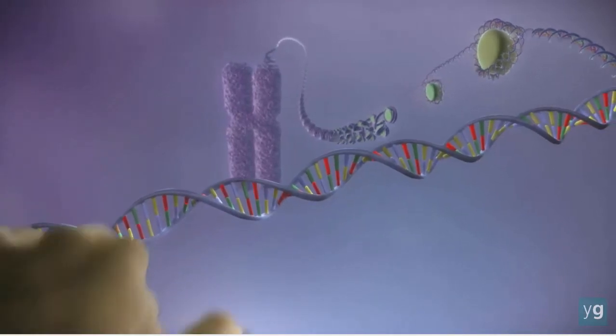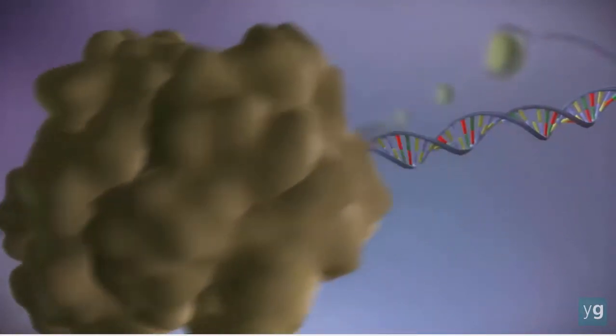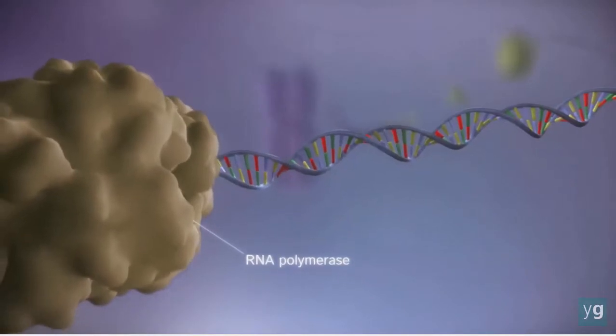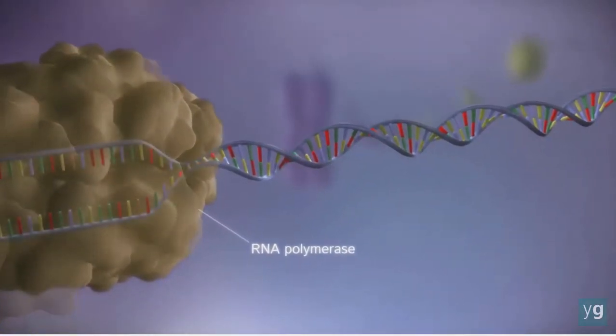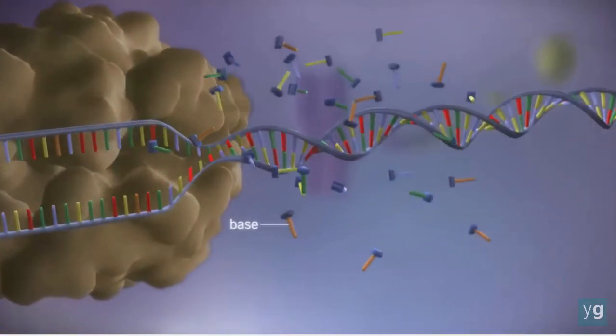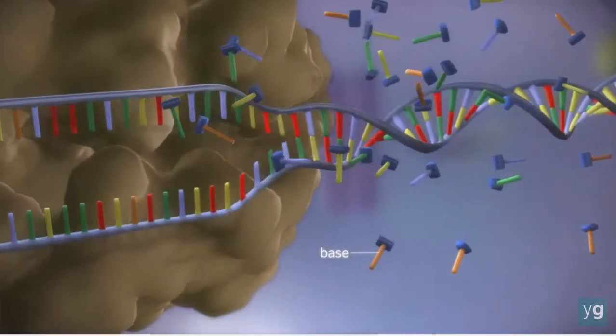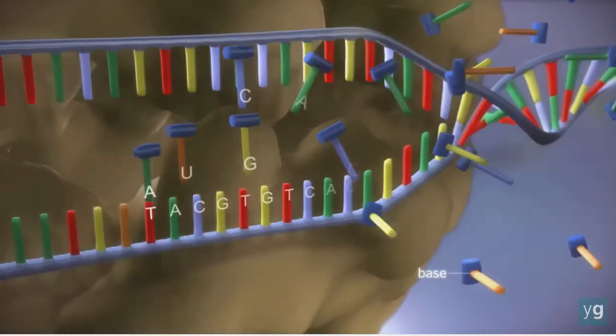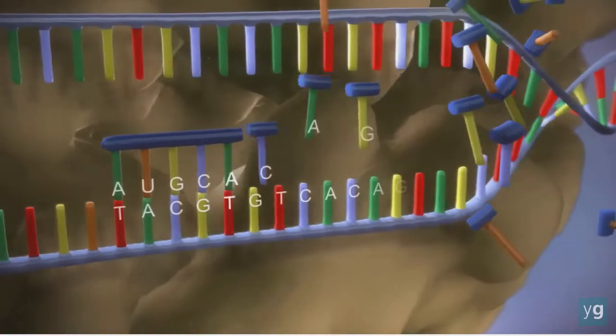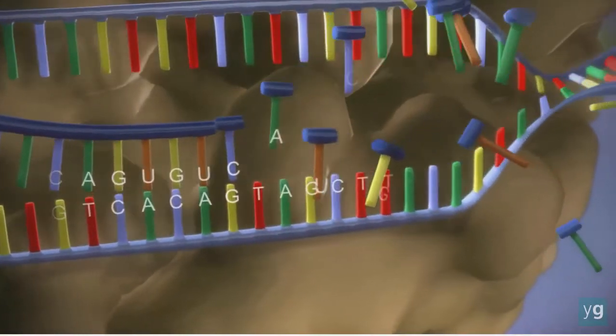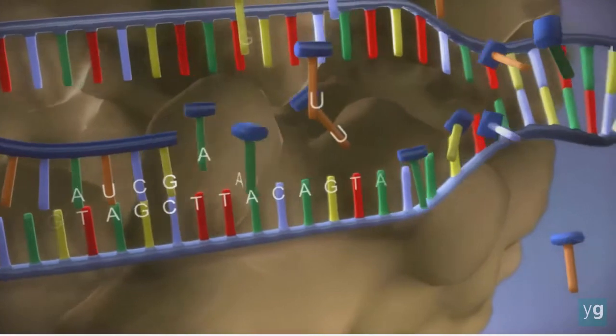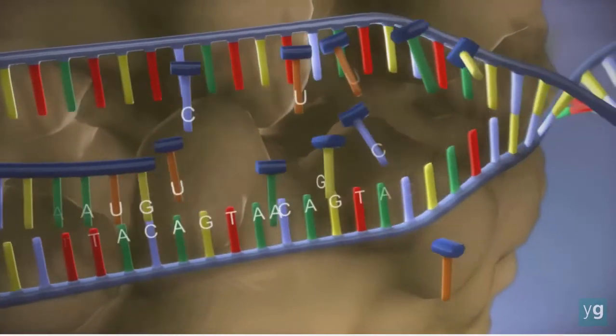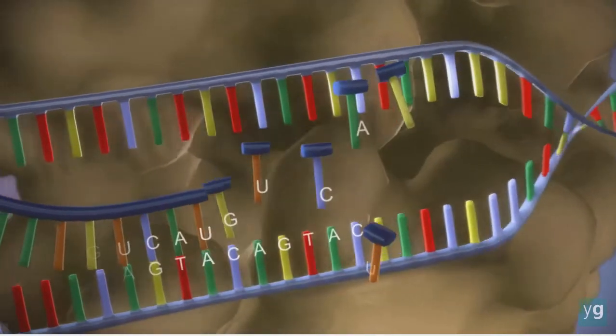When a gene is switched on, an enzyme called RNA polymerase attaches to the start of the gene. It moves along the DNA, making a strand of messenger RNA out of free bases in the nucleus. The DNA code determines the order in which the free bases are added to the messenger RNA. This process is called transcription.